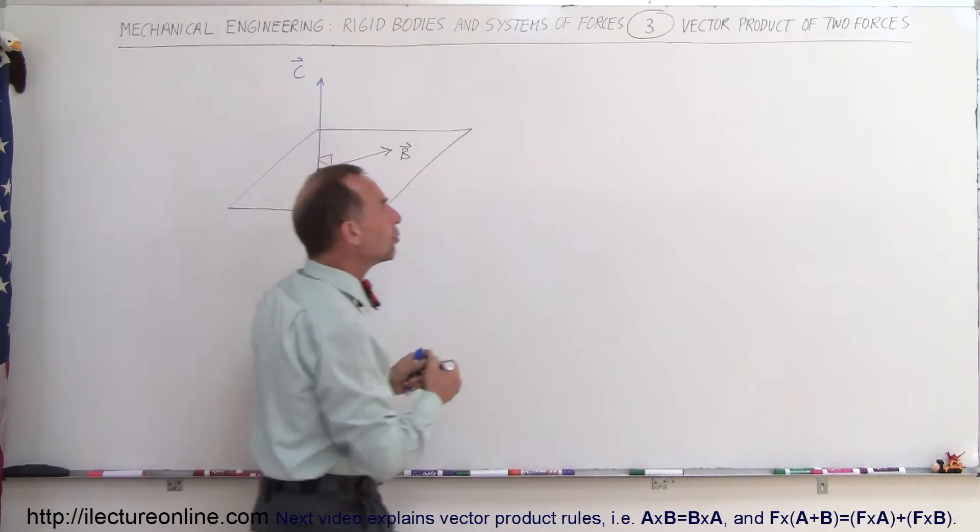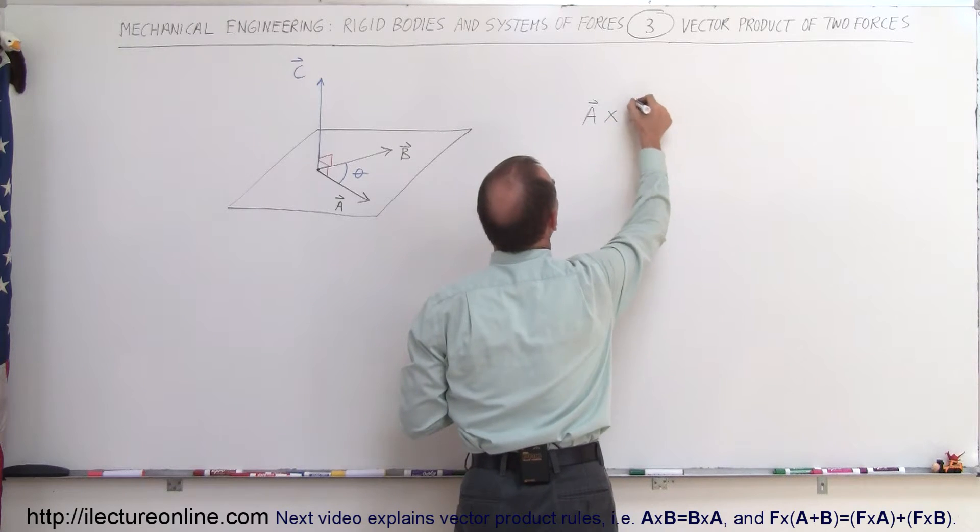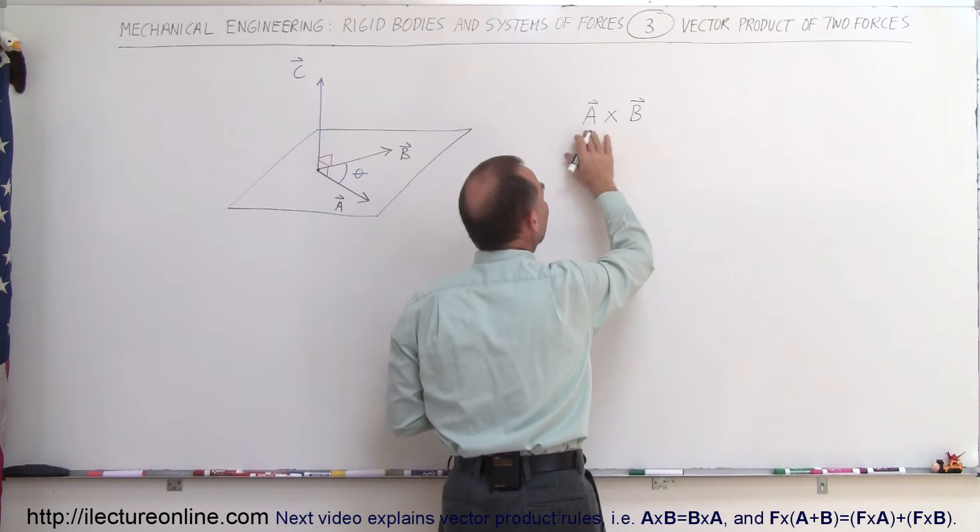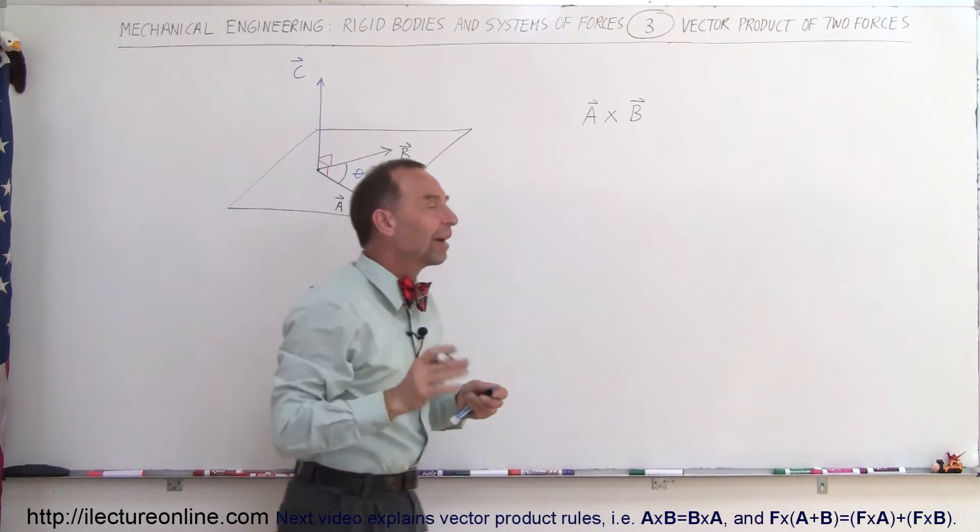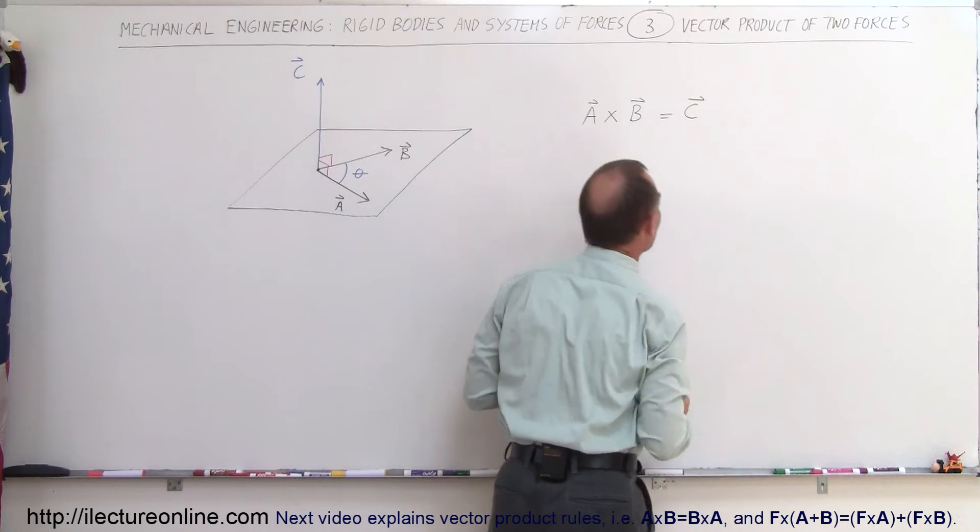So the notation that we use for that is as follows. If we have A cross B, and that's why we call it a vector product. The vector product is said A cross B or A times B, but it's a vector product. In other words, the result of that will be another vector, vector C.